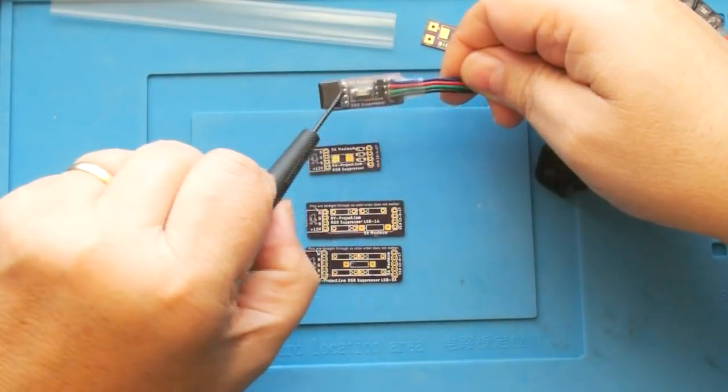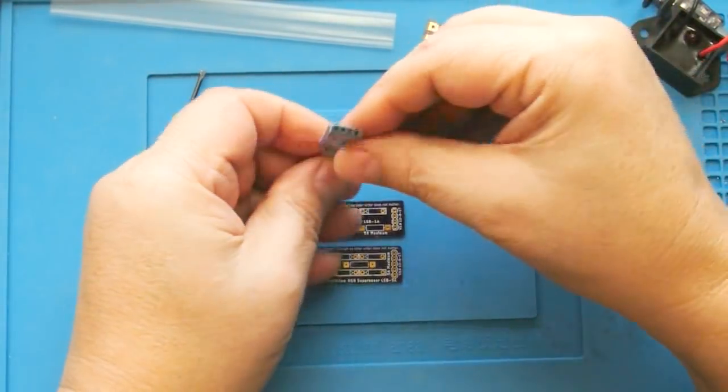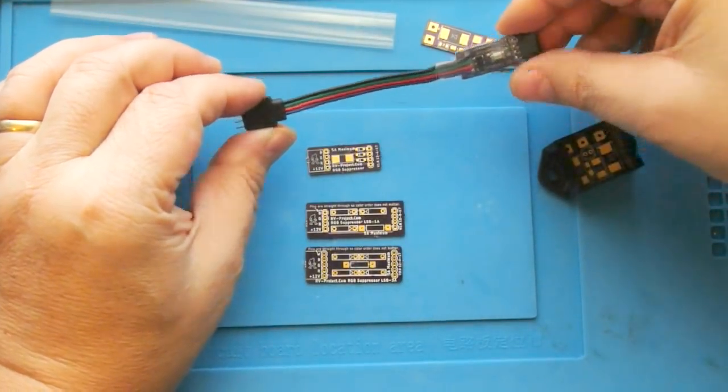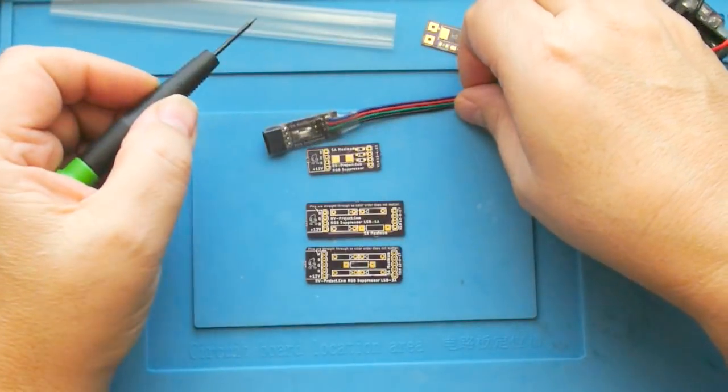Again, this has got that clear heat shrink on here and you just plug your LED into there and then plug this going down to the power or vice versa, and that will protect your LED.